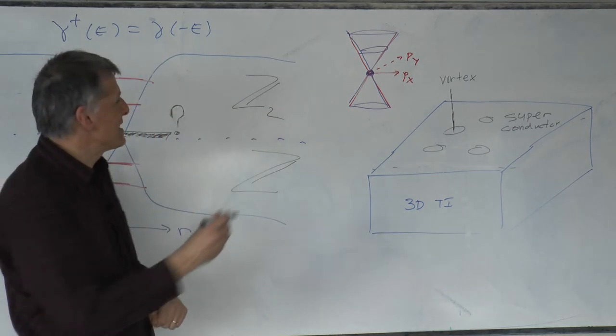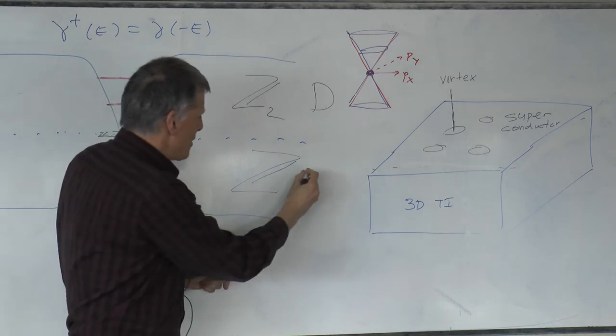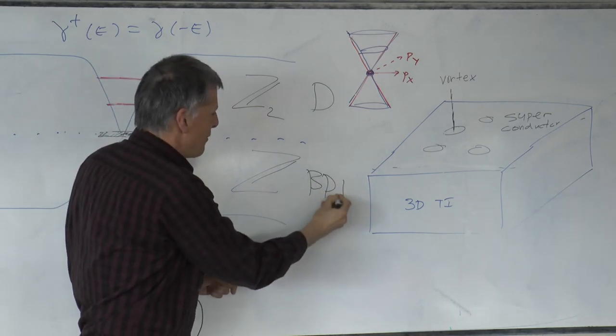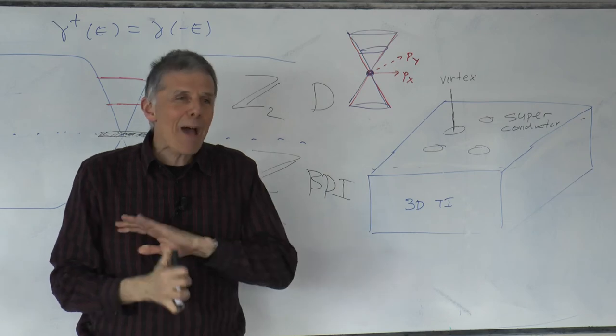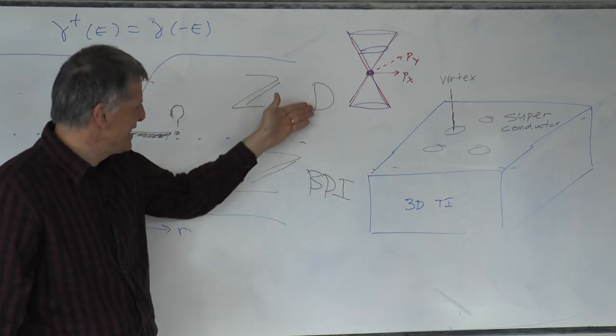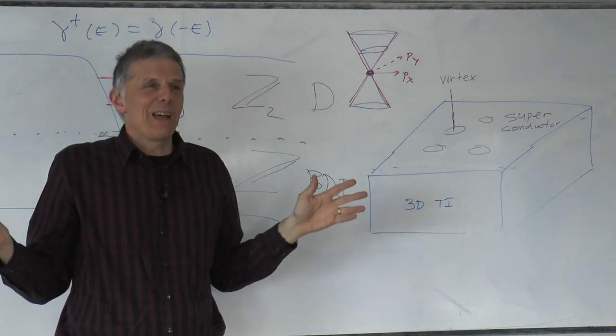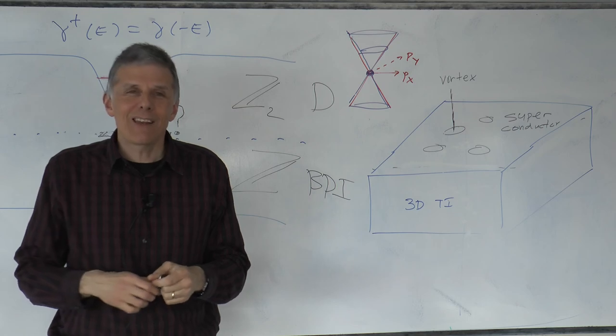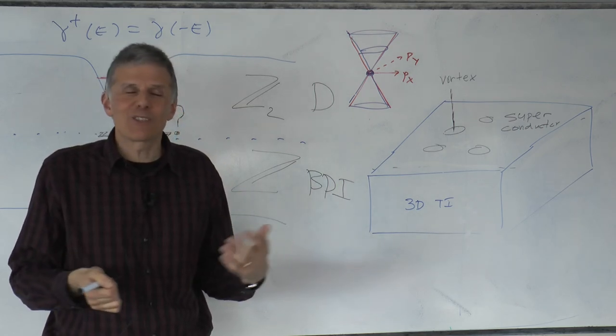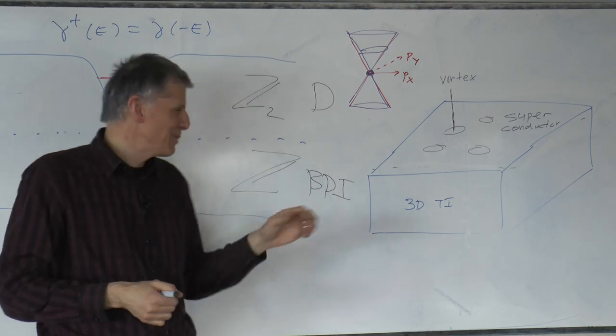If the quantum number is Z2, we speak of a D class symmetry. And if the quantum number is Z, we speak of a BDI or BD1 type symmetry. Absolutely horrendous names. Try to explain to someone why this is D and this is BDI or BD1. They're awful names, but we're stuck with these names. And you'll hear even experimentalists talk about, yeah, my system is a BD1 system and you're working on a D system. This is much more fun.